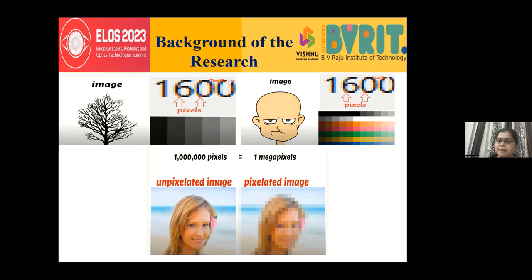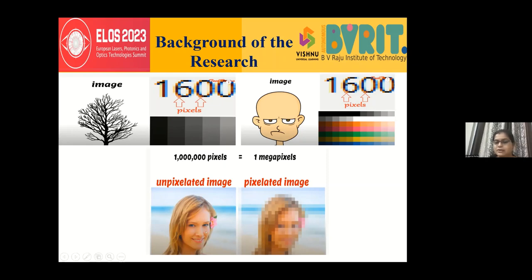Pixels can be grayscale, binary, or color. A color image uses the primary colors red, green, and blue — combinations of RGB give different colors. To understand what a pixel actually is: if you take an image from a camera with good clarity and zoom in on it, you can see the pixelated form, which represents the two-dimensional nature of an image with x and y axes and intensity values.